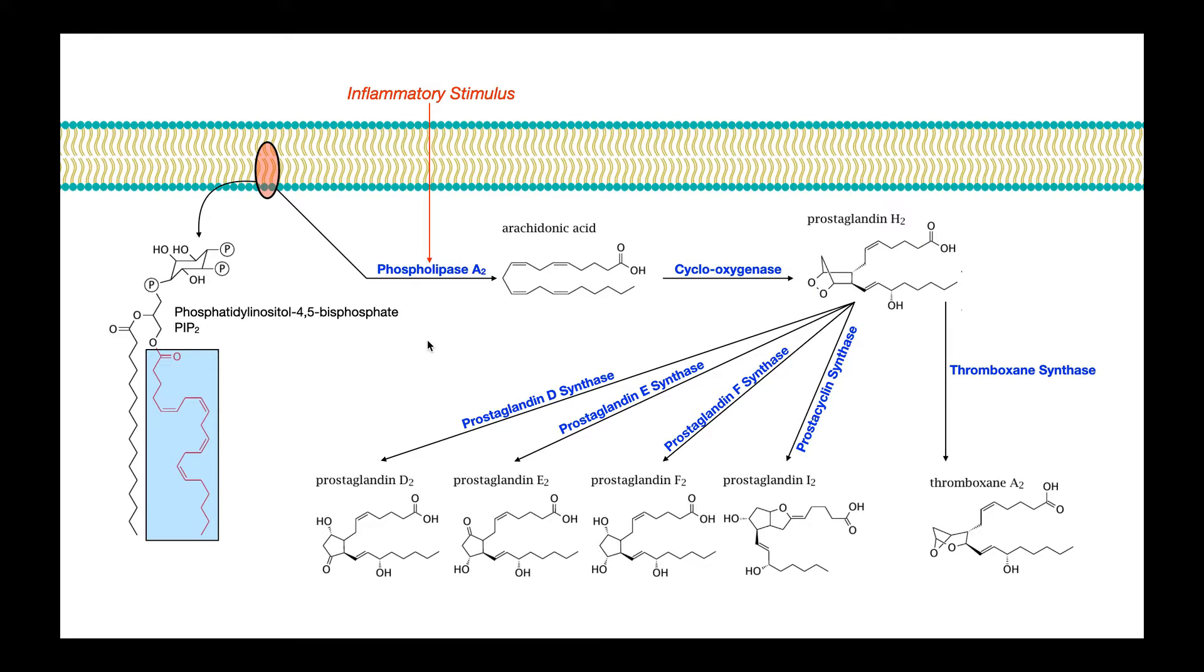So generally speaking, the stimulus to start this pathway is going to be an inflammatory stimulus. So an example of a cell that would have this pathway would be the endothelial cells that line the vasculature. Also, some smooth muscle cells in the vasculature can also operate with this pathway. And so there's some inflammatory stimulus that will activate this enzyme, which is called phospholipase A2.